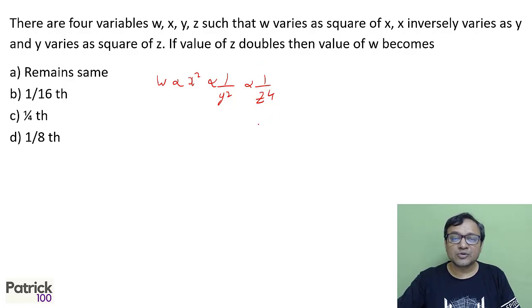So z becomes from z to 2z. So 2z raised to 4. So if you look at w is inversely proportional to that, which will be w will be 1 upon 16 raised to z raised to 4. So that means w will reduce to become 1/16 times. So B option.